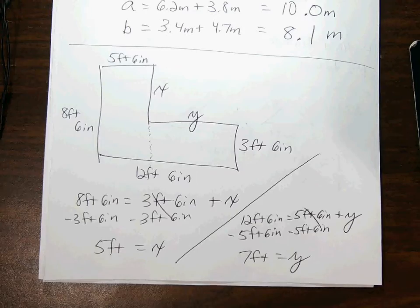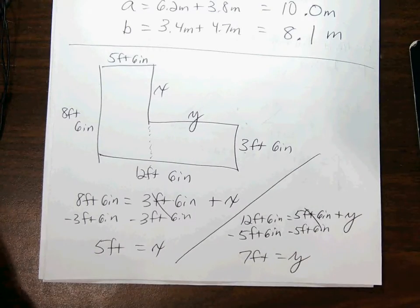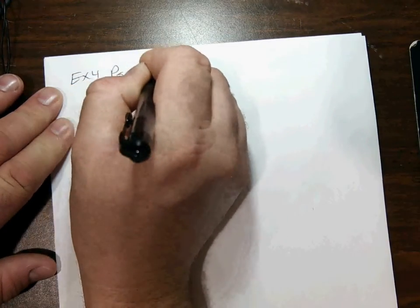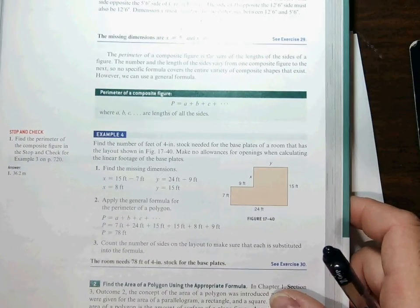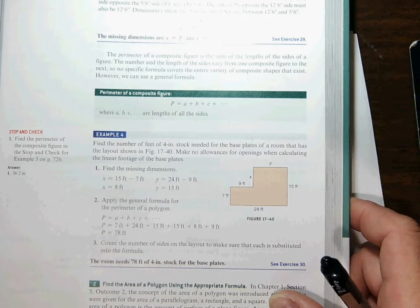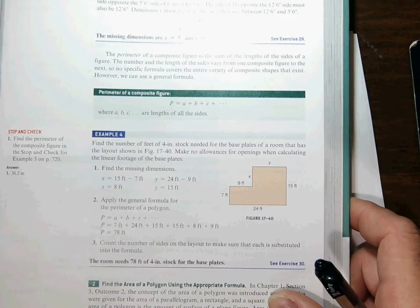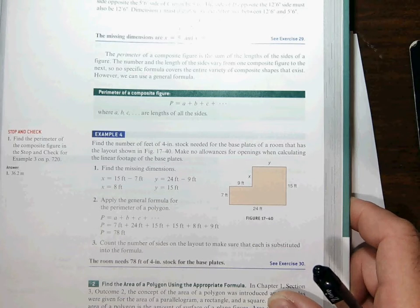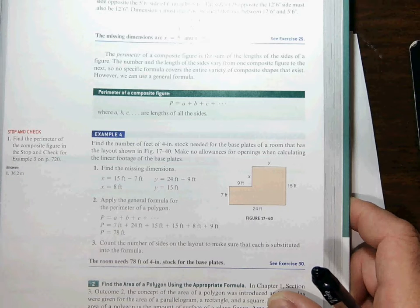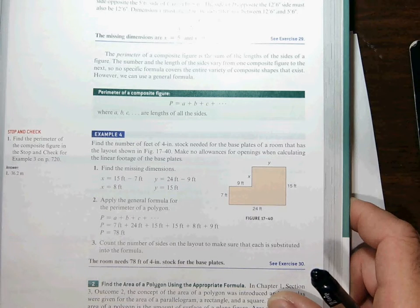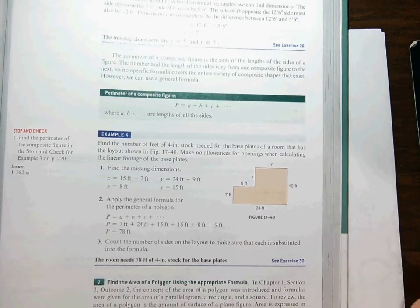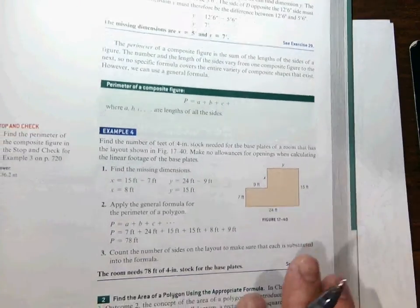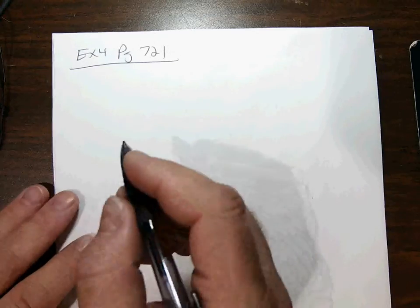Sweet. So perimeter, we add the sides. And our page 721, example 4 now, is asking us to calculate a perimeter. Example 4 on page 721. Calculate the perimeter of some goofy-looking shape. That little shape. It's like an L-shaped figure. We know some of the dimensions. We don't know a couple of them, so we need to figure out the missing dimensions, and then figure out the perimeter. Find the number of feet of 4-inch stock needed for the base plates of a room that has a layout shown in figure 17-40. Make no allowances for openings. That's just saying, just figure out the perimeter of this odd-shaped room. Well, I've got a couple of missing sides there. So first, we need to figure that out.